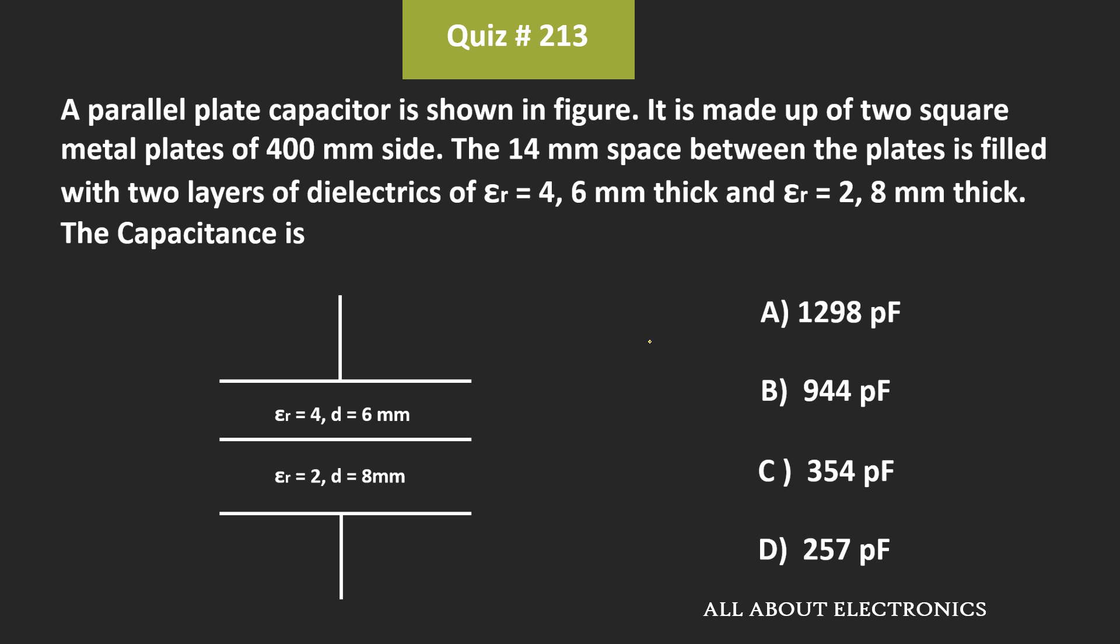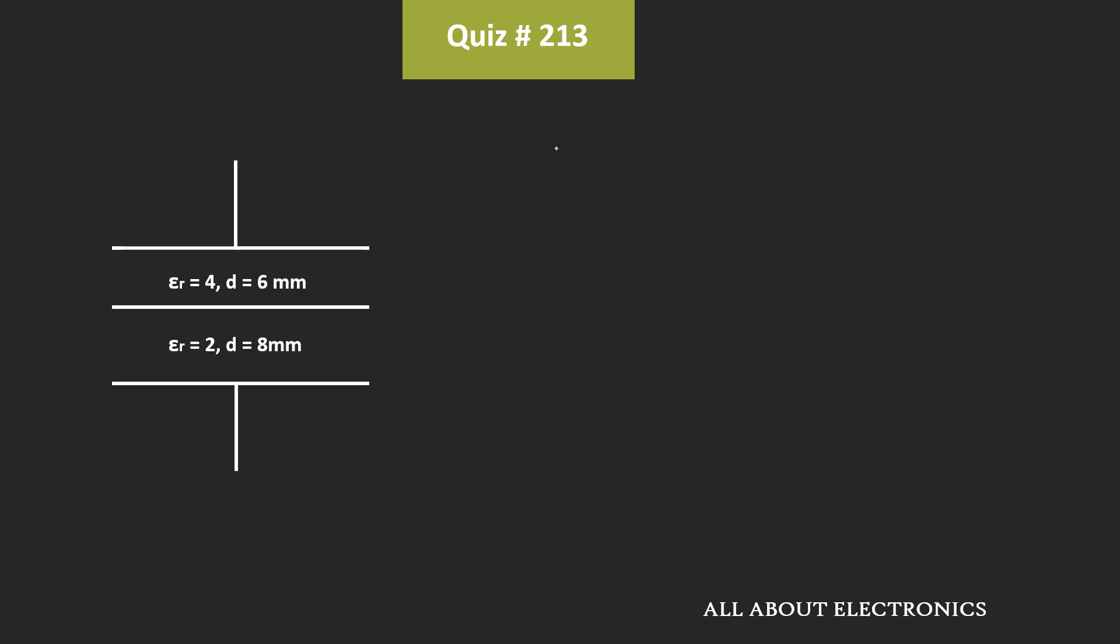Now, here we have been given that the capacitor is made up of two square plates. And the dimension of the plate is 400 mm. That means L is equal to W is equal to 400 mm, that is equal to 0.4 m.